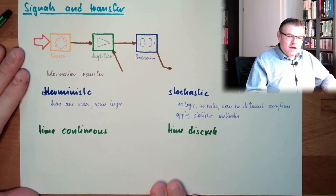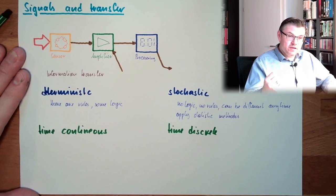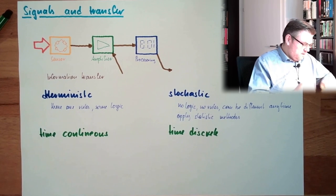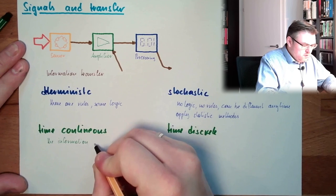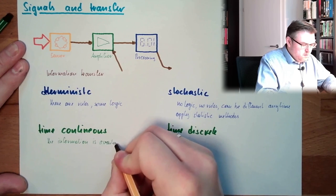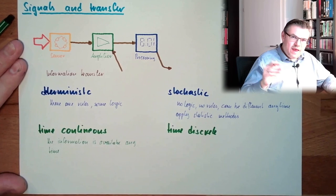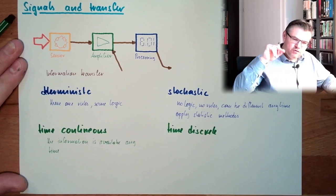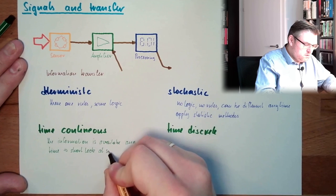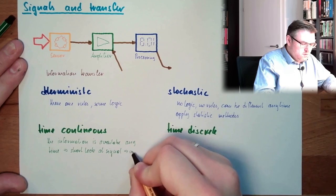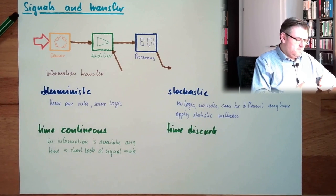What does this mean? Well, time continuous signals are always there, are always holding the information. At any time I look at the signal, I know the information. So the information is available any time. It doesn't really matter which point in time. Time continuous, any short look at the signal, know the information. Time continuous signal.